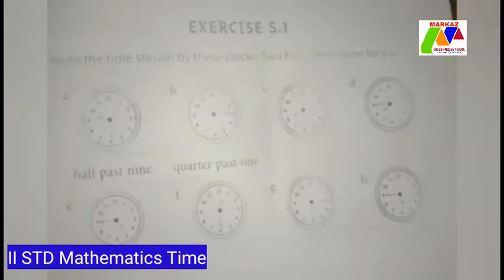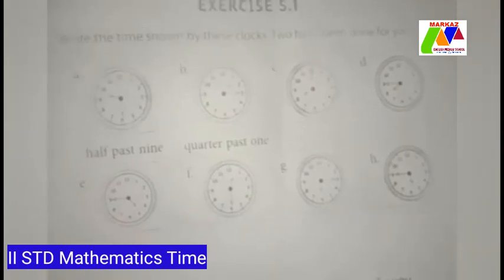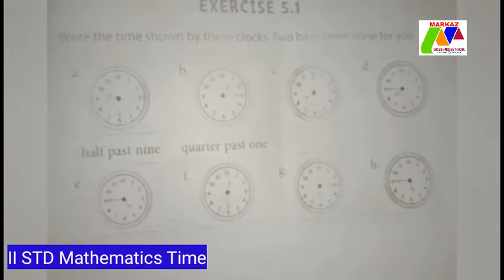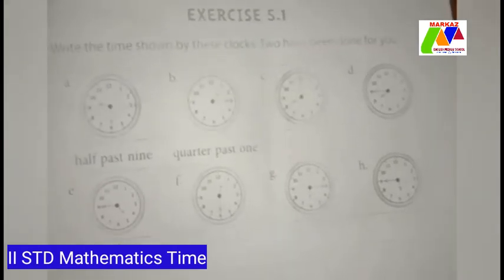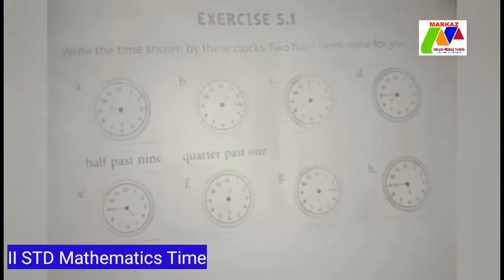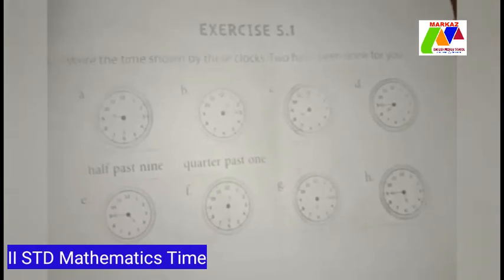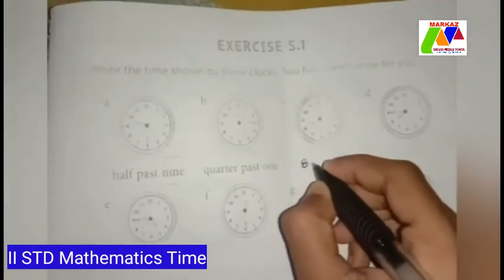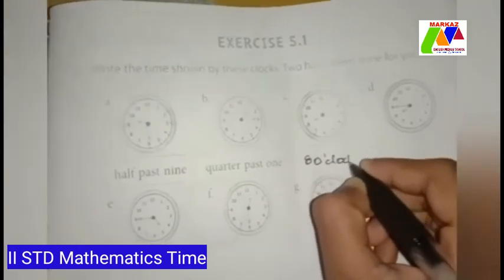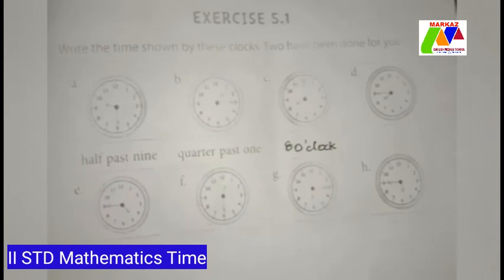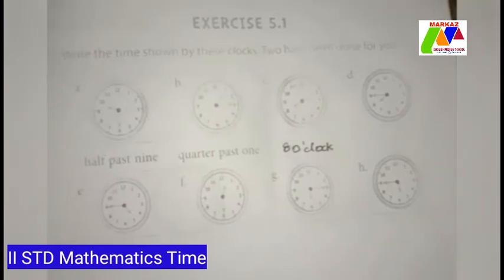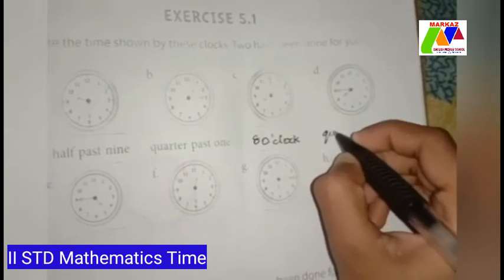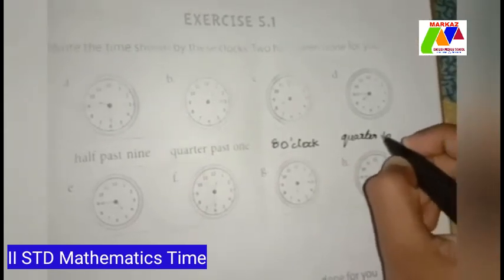Children, now let's take your textbook exercise 5.1: write the time shown by these clocks. Two have been done for you. The first clock shows half past 9, the second clock shows quarter past 1. The third clock shows 8 o'clock. The next clock shows quarter to 8. We need 15 minutes to get to 8.